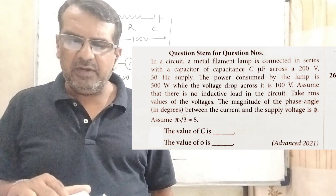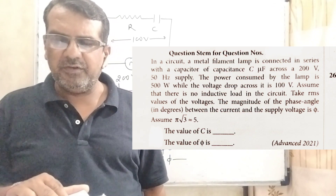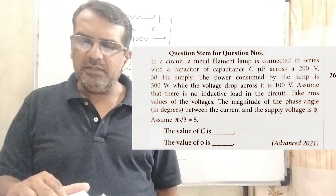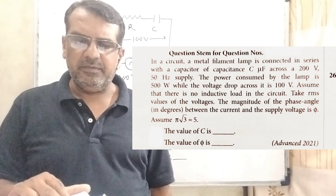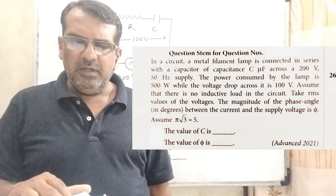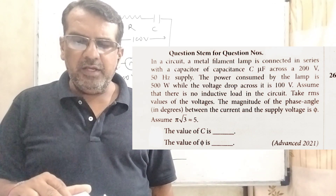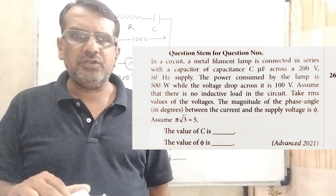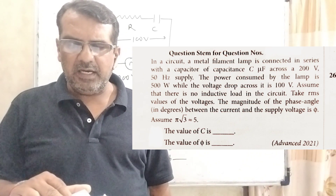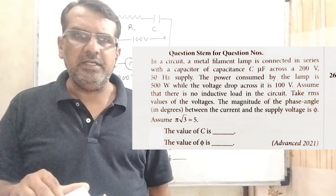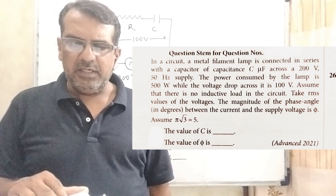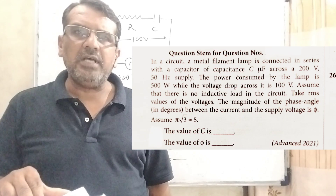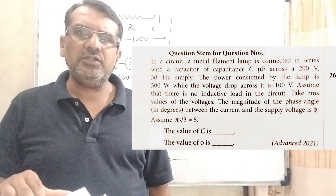Take RMS value of the voltage. The magnitude of the phase angle in degrees between the current and the supply voltage is phi. Here assume π√3 equal to 5, it is given. We have to find two things: the value of C, and the value of phi. This question is from JEE Advanced 2021.